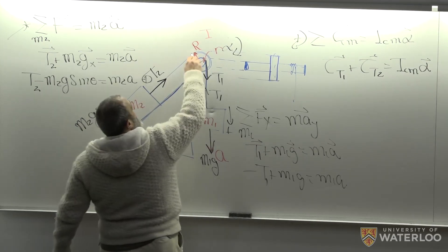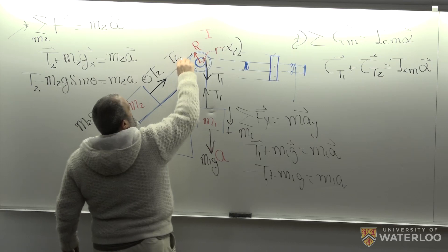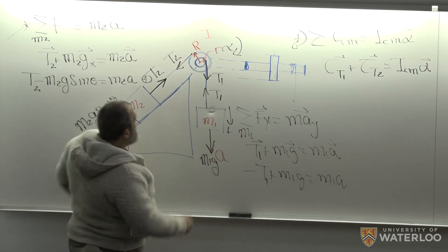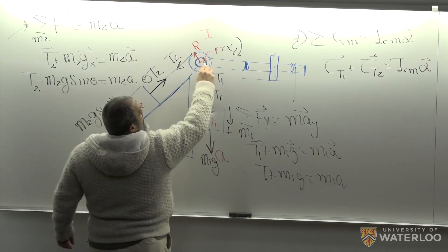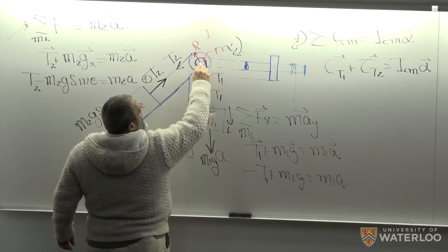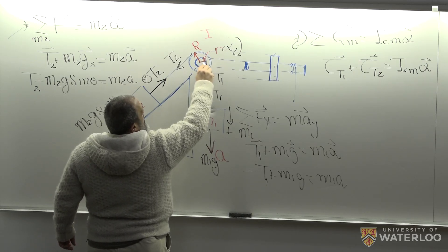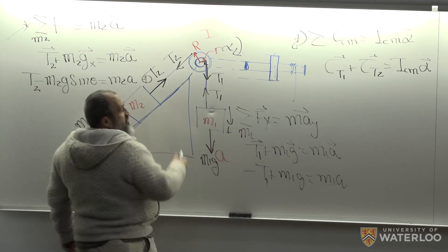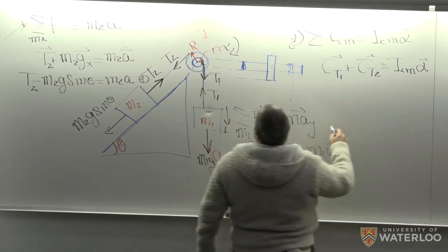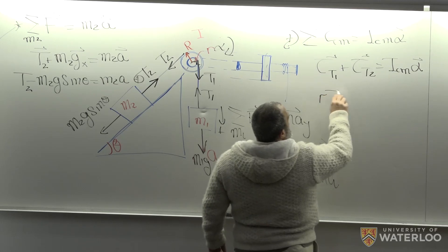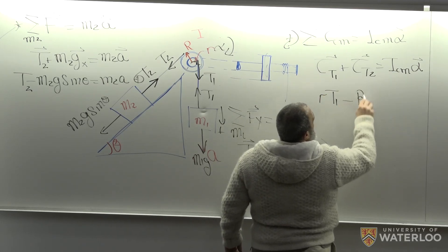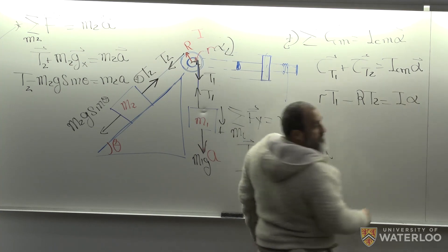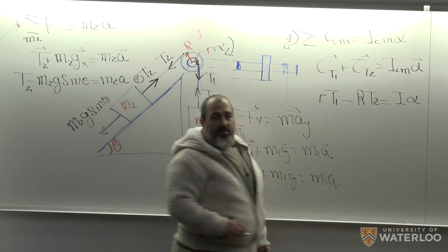Alpha is this way — we'll pick counterclockwise as positive. Whatever torque tries to spin it that way is positive. Torque is force times distance, so distance is r for T1 and R for T2. So: little r times T1 minus capital R times T2 equals I alpha. That's equation three.